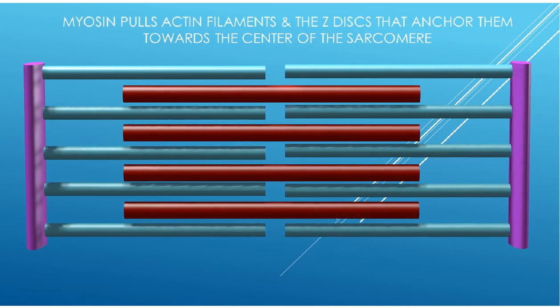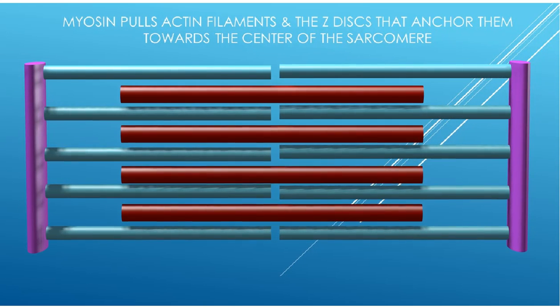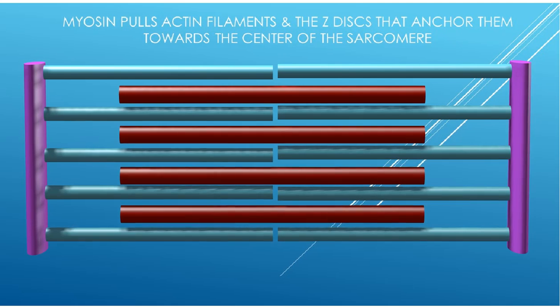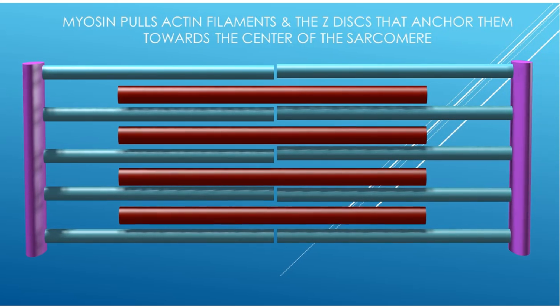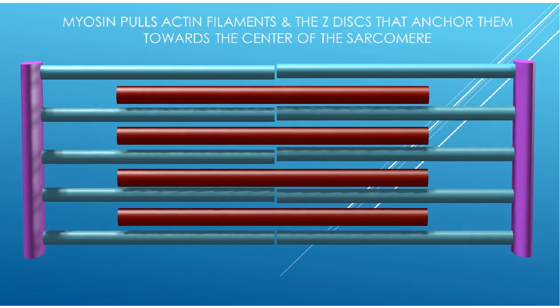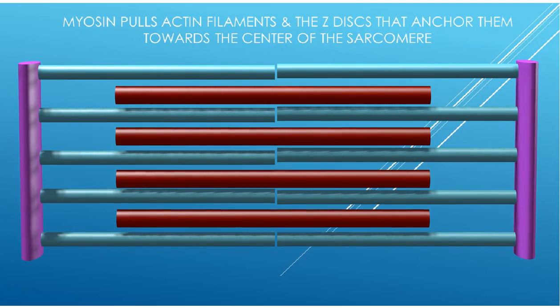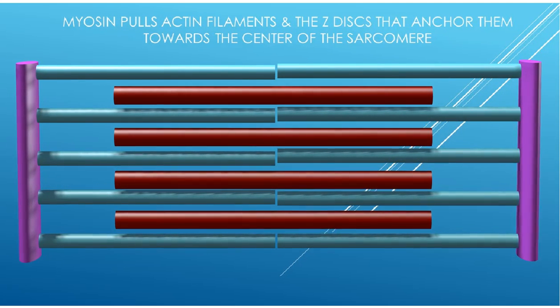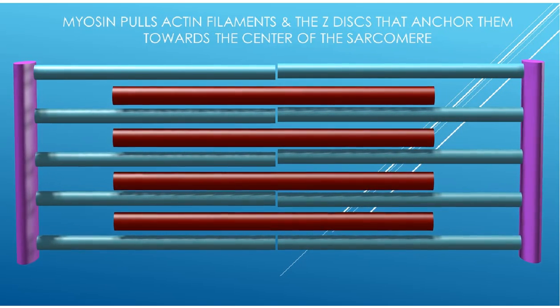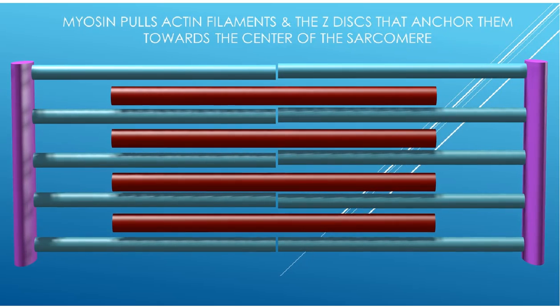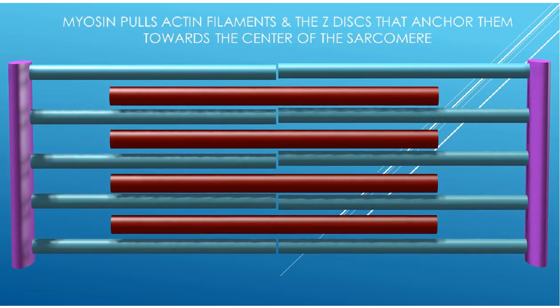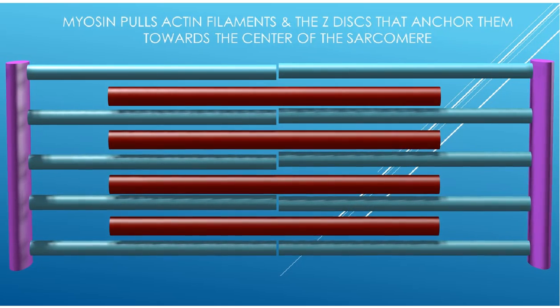That means that the opposing sides of actin will be pulled closer to each other, and the Z-discs, here in pink, will approach each other.